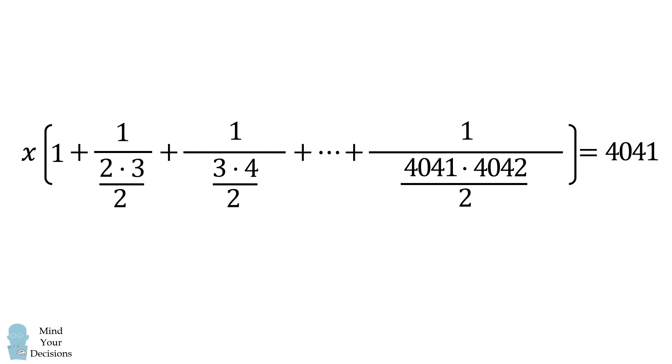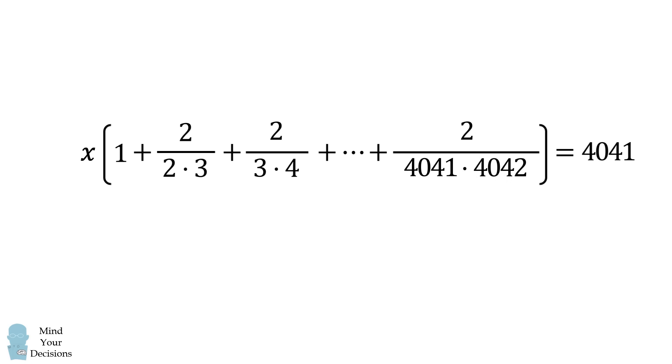We then have 1 over tn for each of these fractions. So we'll take the reciprocal. So this will bring the 2 to the numerator of each of these fractions.